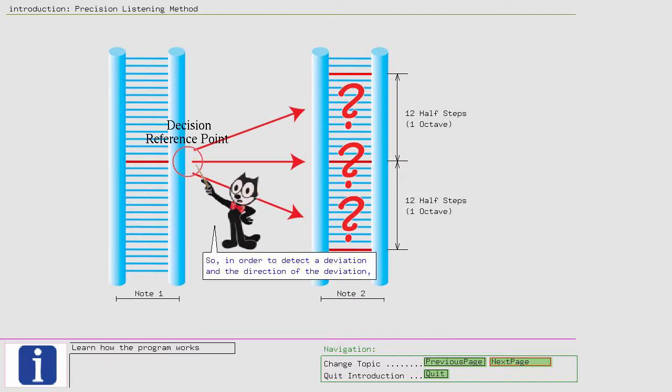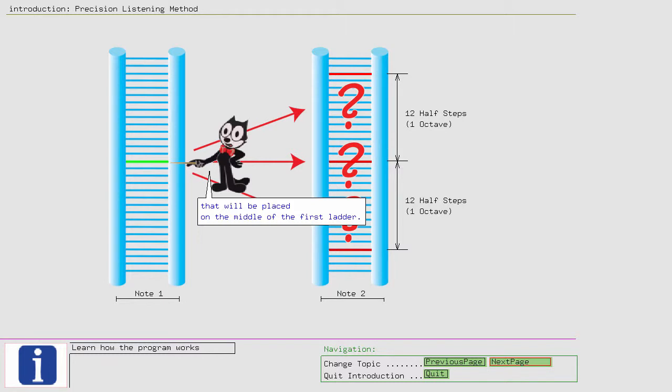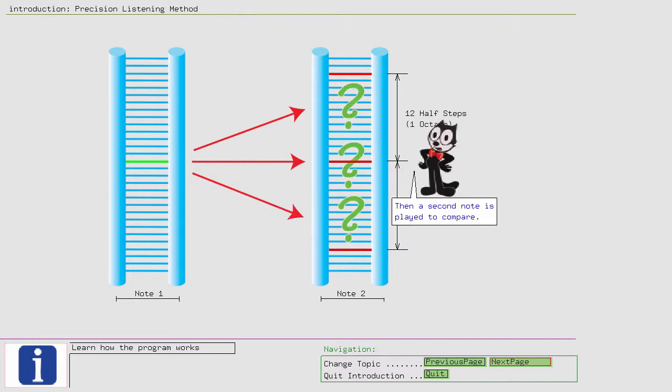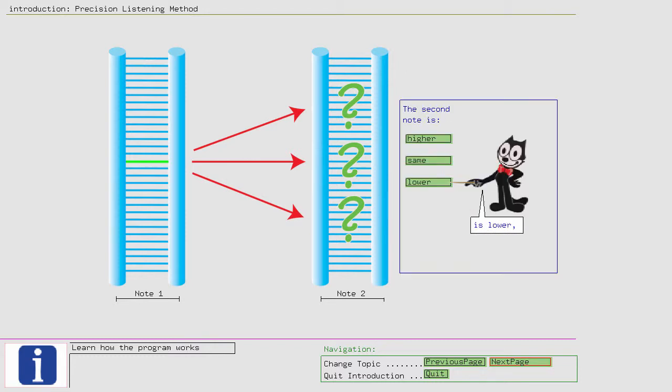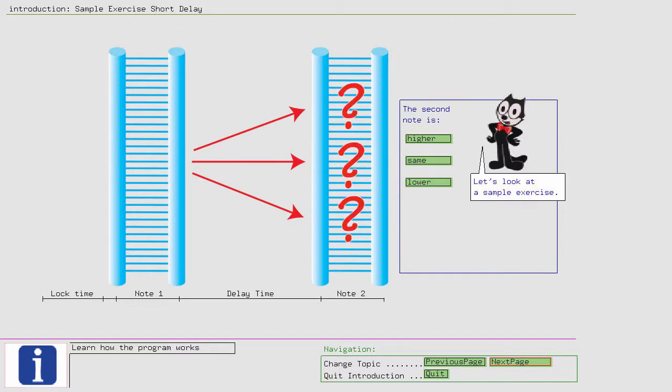In order to detect a deviation in the direction of the deviation, the exercise presents a random note that will be placed on the middle of the first ladder. Then a second note is played to compare. Your task is to decide if the second note is lower, the same, or higher. Let's look at a sample exercise.